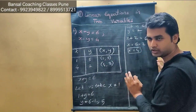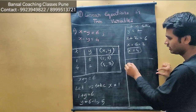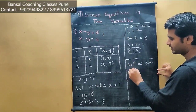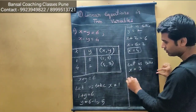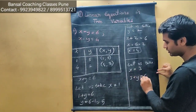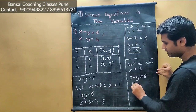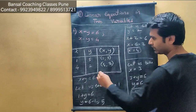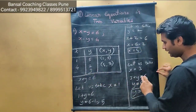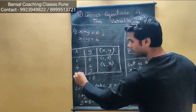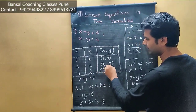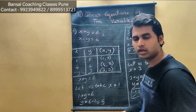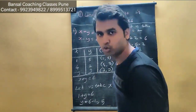Lastly, let us take x is equal to 3. So 3 plus y equals 6, therefore y equals 6 minus 3, y equals 3. So x is 3 and y is 3 — our third point is (3, 3). We have now solved equation number 1 for three values. Similarly, we'll solve equation number 2 as well.